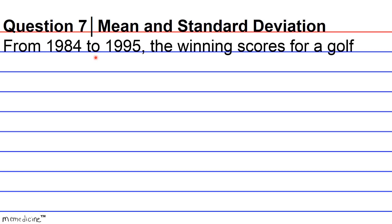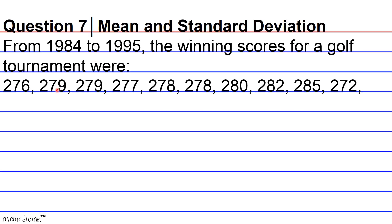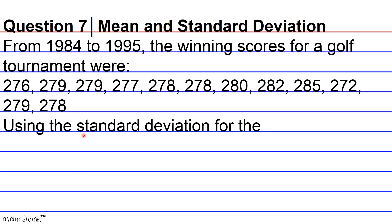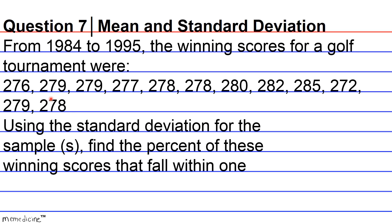From 1984 to 1995, the winning scores for a golf tournament were: 276, 279, 279, 277, 278, 278, 280, 282, 285, 272, 279, and 278. Using the standard deviation for the sample (S), find the percent of these winning scores that fall within one standard deviation of the mean. Press pause if you need to, and I'll give you a moment to think.